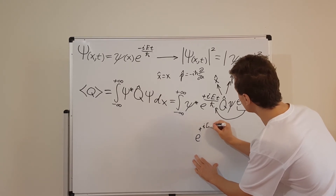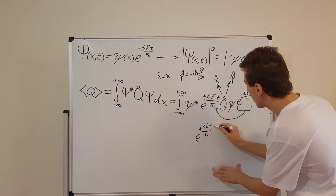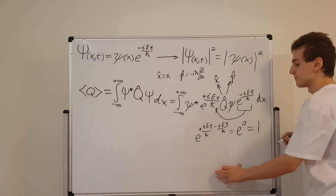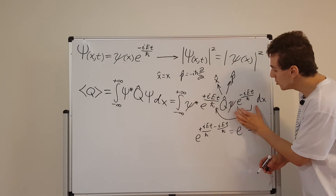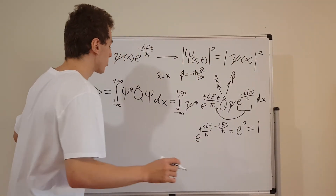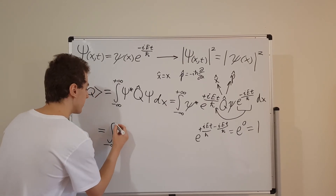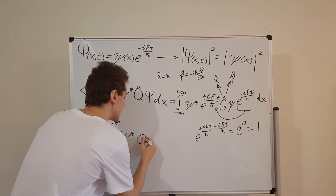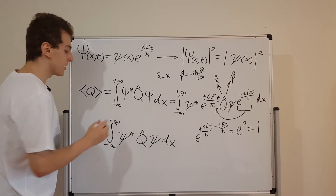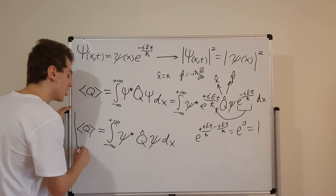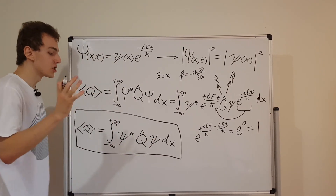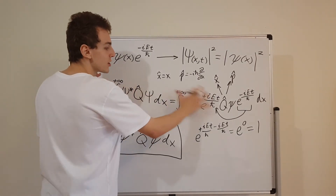We take the plus i E t over h-bar and combine it with the minus i E t over h-bar — since they're being multiplied together, these cancel and give us e to the zero, which is just one. This is how we get rid of the time dependence. When we move the exponential over and combine it, that time dependence disappears. What we're left with is the integral from minus infinity to plus infinity of little psi star sandwiching the operator q-hat with another little psi, integrating with respect to x. This is the definition of the expectation value for stationary states with no time dependence, which we'll use in the next few videos of this mini-series.